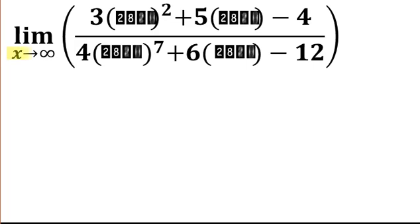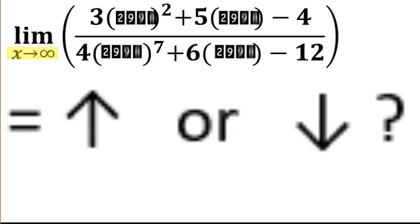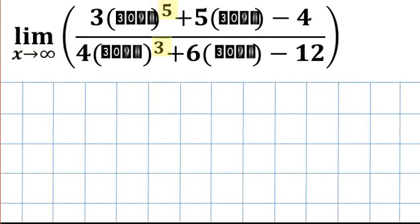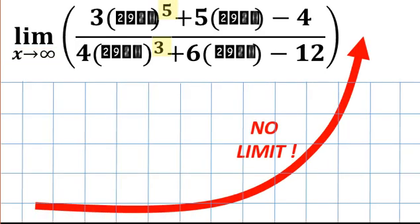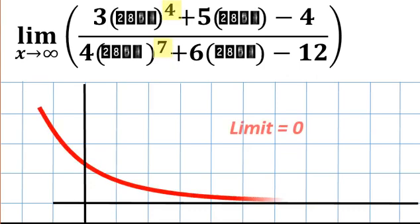You got to think of the input as it is approaching infinity, yo. How is the function value changing as the input x be increasing, yo? If the numerator input has a higher degree, then there is no limit, yo. But if the denominator is winning, then it has a limit of zero, yo.